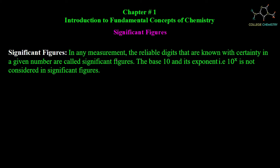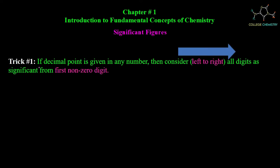In any measurement, the reliable digits that are known with certainty in a given number are called significant figures. If a decimal point is given in any number, then consider left to right all digits as significant from the first non-zero digit.